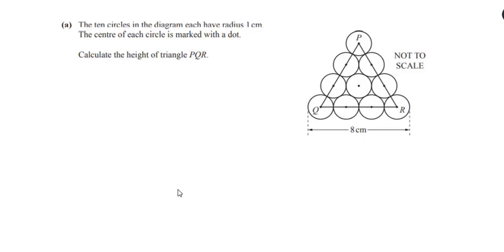Hello and welcome to my channel. In this video we are going to solve an example on mensuration. The 10 circles in the diagram each have a radius of 1 centimeter, arranged in a particular pattern, and each circle has a radius of 1 centimeter.